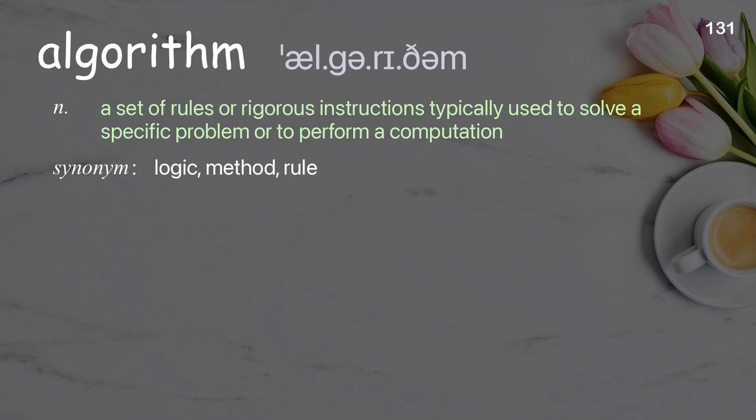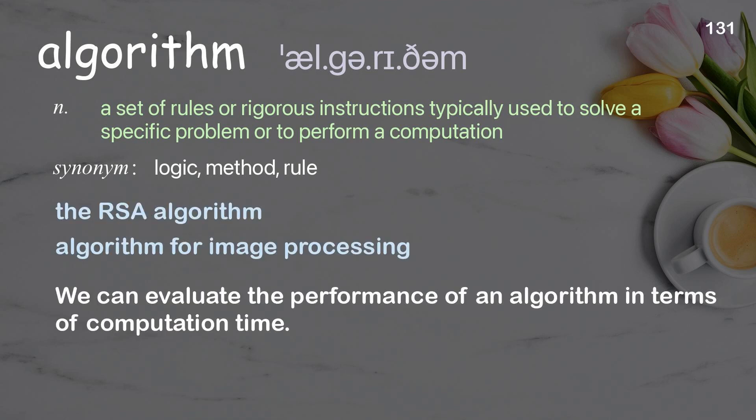Algorithm: a set of rules or rigorous instructions typically used to solve a specific problem or to perform a computation. Examples: the RSA algorithm, algorithm for image processing. We can evaluate the performance of an algorithm in terms of computation time.